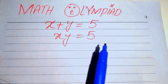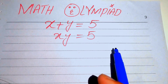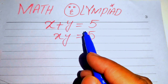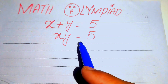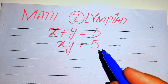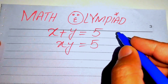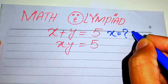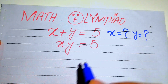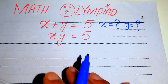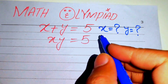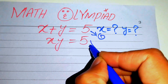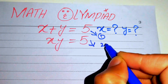Hello everyone, welcome. We solve this math olympiad algebra problem. We have x plus y equals 5, and x multiplied by y equals 5. We will solve this problem for the values of x and y. We call the first equation number one and the second equation number two.